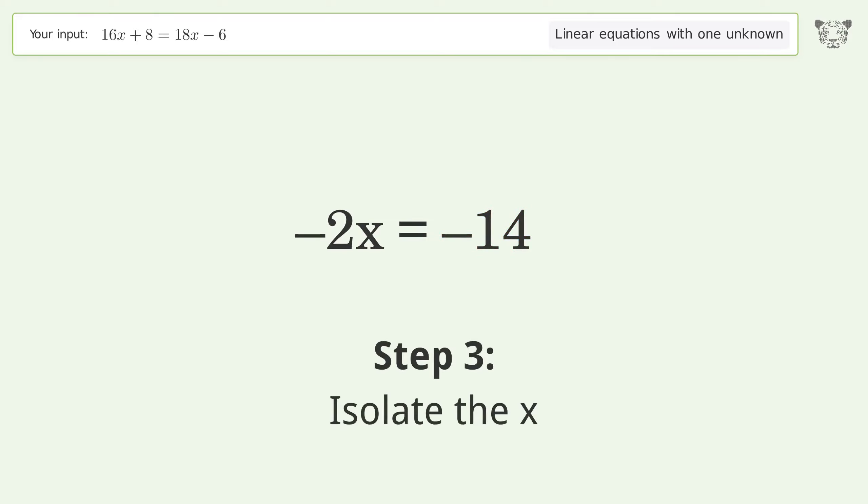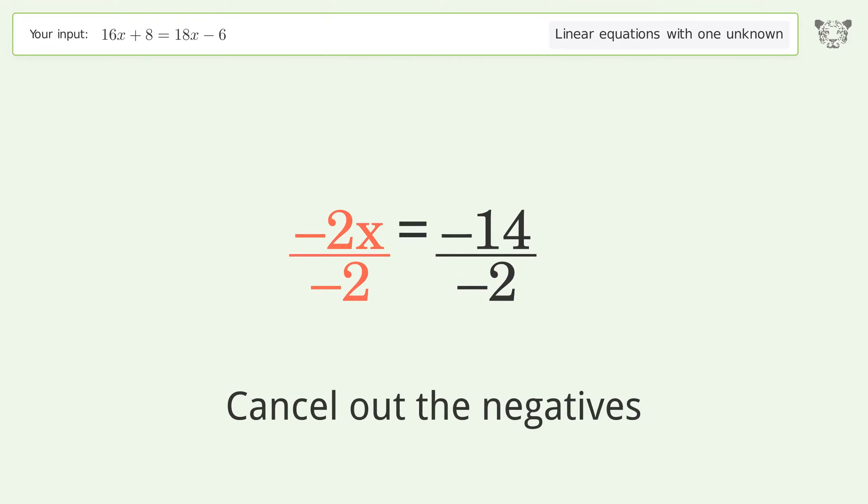Isolate the x. Divide both sides by negative 2. Cancel out the negatives. Simplify the fraction. Cancel out the negatives.